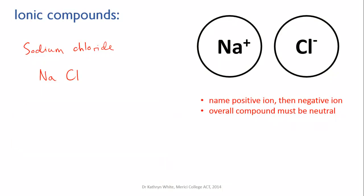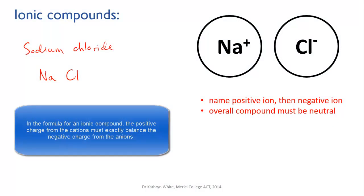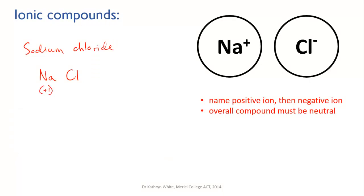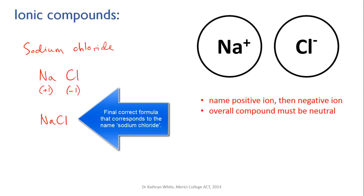The important thing about the formula is that it must have no overall charge. That is, the amount of positive charge must exactly equal the amount of negative charge. We can check this is the case for sodium chloride. The sodium ion has a plus one charge and the chloride ion has a minus one charge. So if we have one of each of them then the positive of the sodium cancels out the negative of the chloride and it's neutral. That means our formula NaCl is correct.